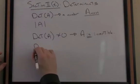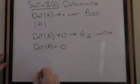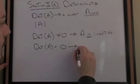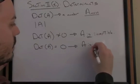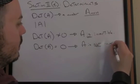On the other hand, if the determinant of A is equal to zero, then the implication is that A is not invertible. It has no such inverse.